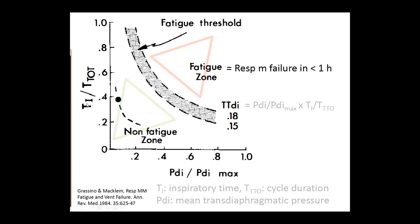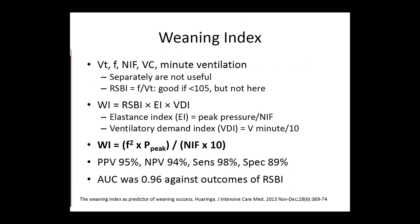Note that the ratio of inspiratory time over total time becomes higher because of tachypnea, which reduces total respiratory time — it's not that inhalation takes longer, but exhalation becomes less available. So the product of the two falls into a red area — someone who will fail weaning in less than one hour — or a green area, meaning okay to extubate. Each respiratory parameter alone — tidal volume, frequency, NIF, vital capacity, minute ventilation — is not a good predictor by itself.